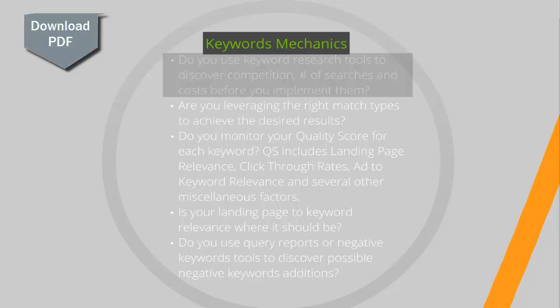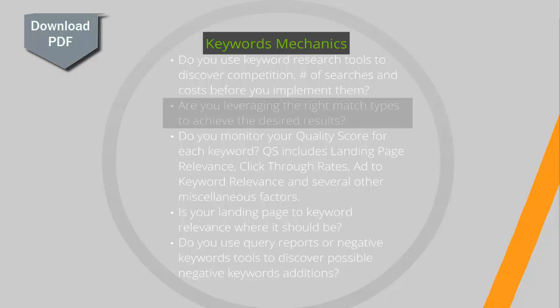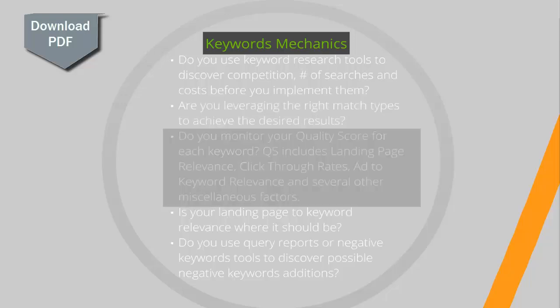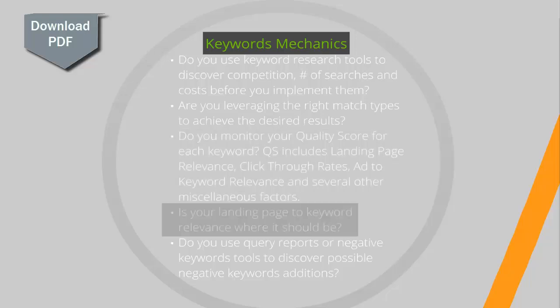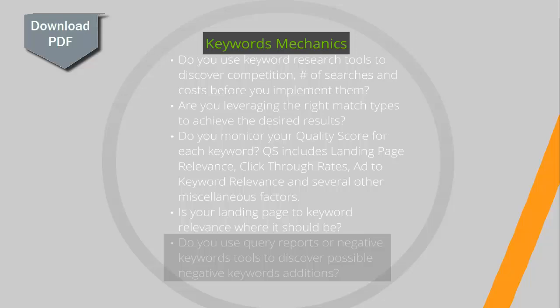Do you use keyword research tools to discover competition, number of searches, and costs before you implement them? Are you leveraging the right match types to achieve the desired results? There can be a vast difference between a broad and exact match term. Do you monitor quality scores for each keyword? Remember, quality scores include landing page relevance, click-through rates, ad to keyword relevance, and several other miscellaneous factors. Is your landing page to keyword relevance where it should be? Do you use query reports or negative keyword tools to discover possible negative keywords that should be added?